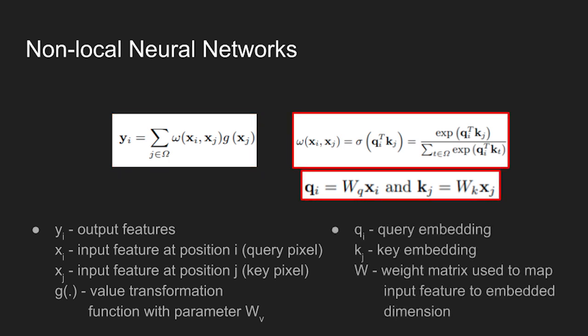Function w of xi and xj, typically instantiated by an embedded Gaussian, is the embedded similarity function from pixel j to pixel i. Here, xi is referred to as a key pixel, and xj is referred to as a query pixel.